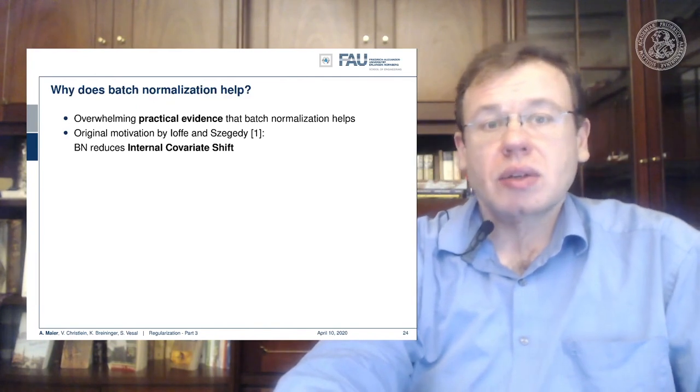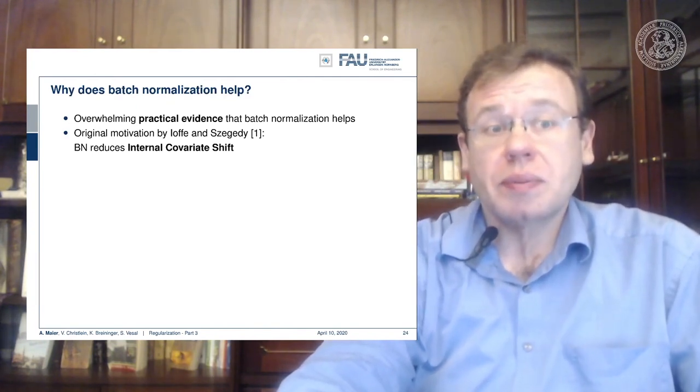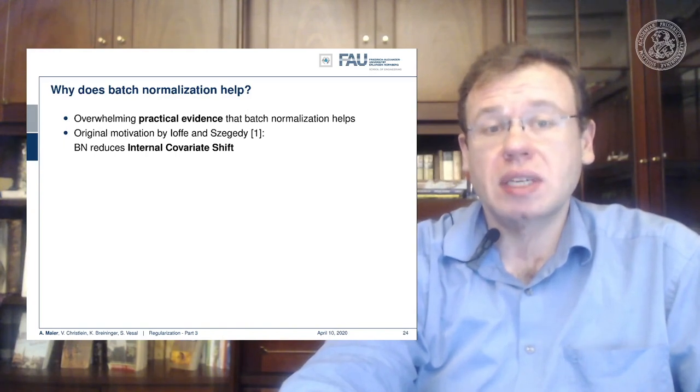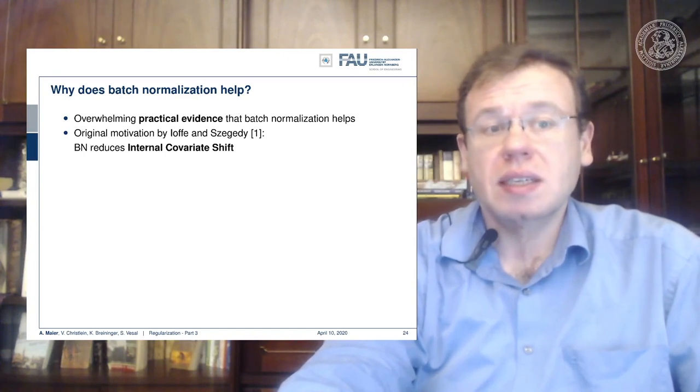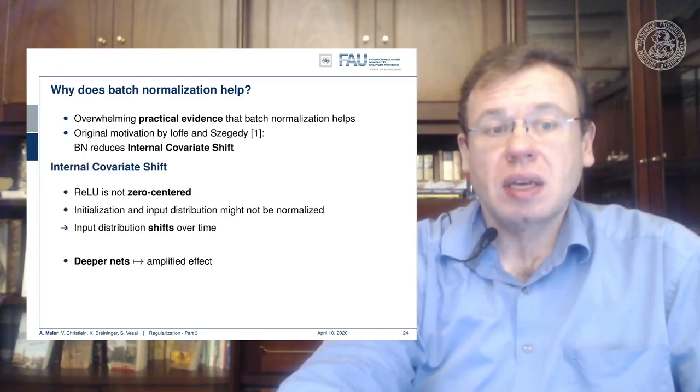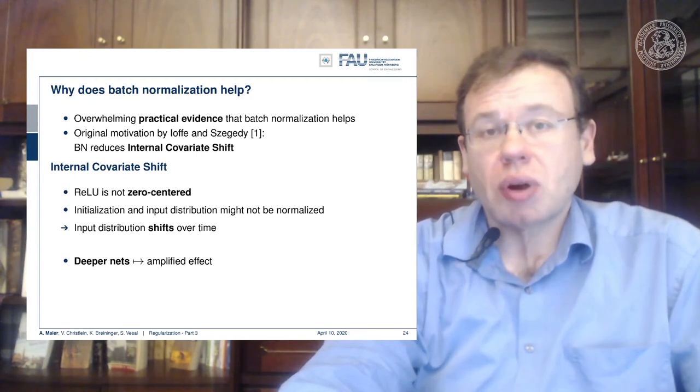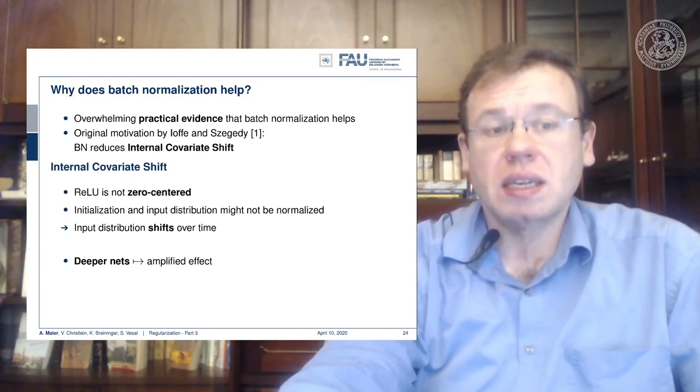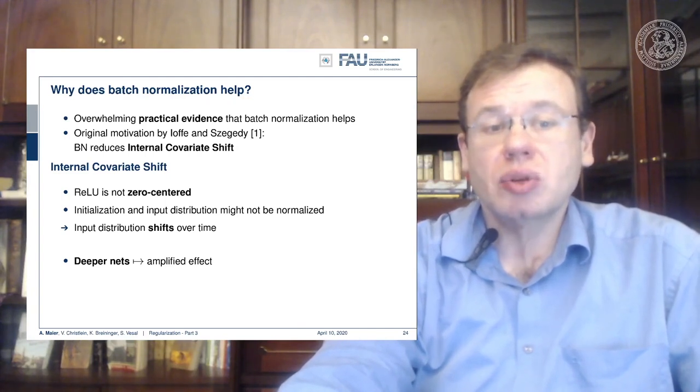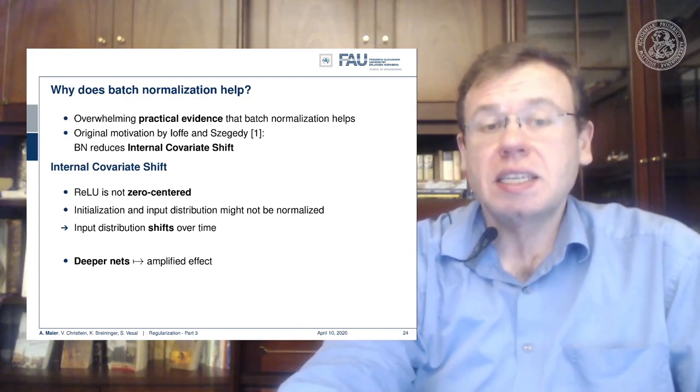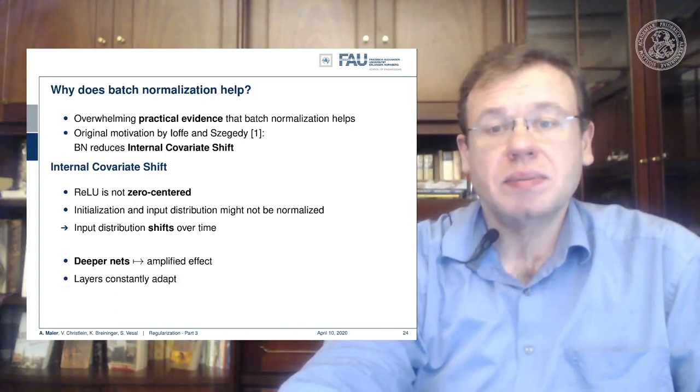So you may argue why does batch normalization actually help and there's overwhelming practical evidence that it's really a useful tool. This has been originally motivated by the internal covariate shift. So the problem that the relu is not zero centered was identified and then also initialization and input distribution may not be normalized. And therefore the input distribution shifts over time. In deeper nets, you even get amplified effect. So as a result, the layers constantly have to adapt and then this leads to slow learning.